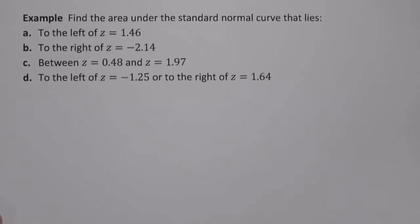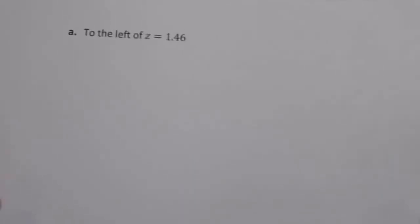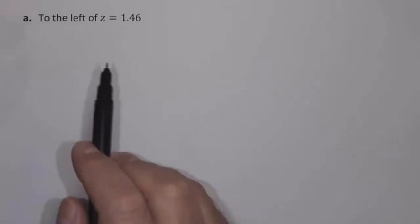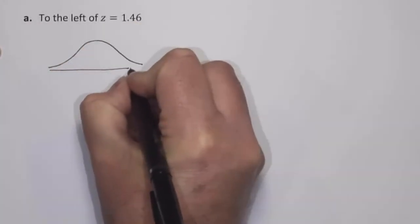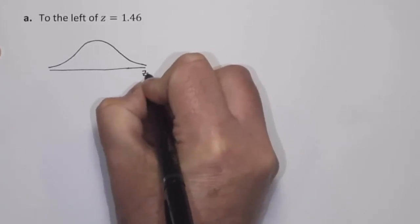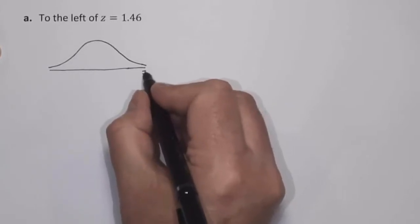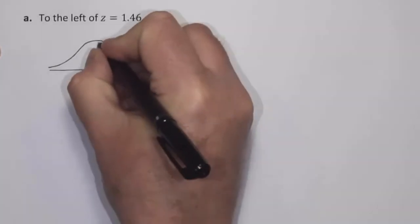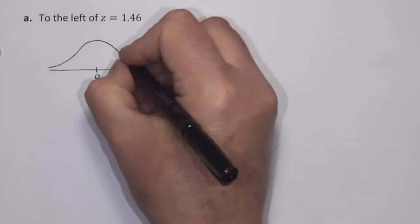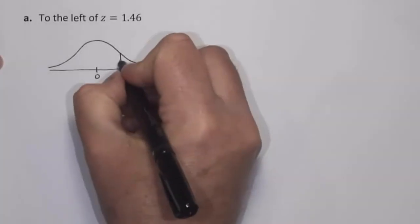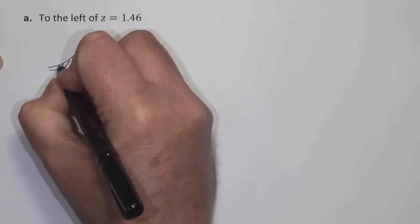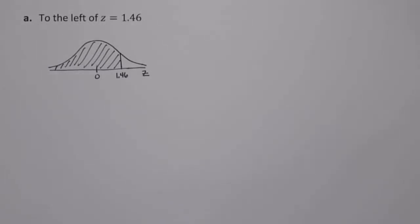Let's begin by using the standard normal table from the textbook, looking at one part at a time. For Part A, we want to find the area to the left of z equals 1.46. Let's begin by drawing the region we're trying to find. Here we have our standard normal distribution, with z as our random variable. The mean is 0 here in the center. So 1.46 would be over to the right of 0, and we're finding this area to the left of 1.46. We can use our standard normal table to do this.